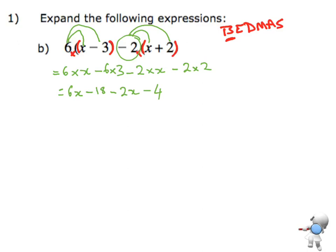Now I can collect the like terms. I've got 6x take away 2x, and minus 18 take away 4. I'm just moving them into a different order, putting the x's at the front.